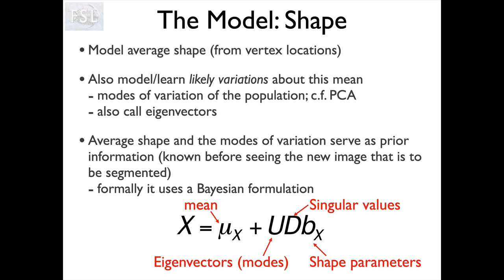There's a mean component represented by the mu vector, and then we represent the likely variations in terms of modes — equivalently called eigenvectors — similarly to what you might see if you're familiar with PCA. There are also singular values which tell us how much of that mode we typically see in the population — is it a small or large amount of that change? And then there are individual shape parameters, the B values, which tell us how much of each mode we see for this particular subject. The B values are how we adjust the amount of each mode to best fit each individual subject, whereas the modes themselves characterize the whole population. We learn the mean, modes, and singular values from the whole training set.